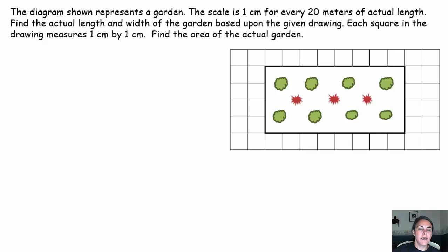All righty, let's take a look. So we know one centimeter is 20 meters. Let's figure out how many centimeters in our length. So if I look at my length, one, two, three, four, five, six, seven, eight. There's eight centimeters in my length on my drawing.